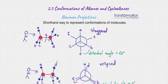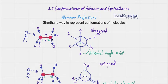We have two carbons — carbon number one and carbon number two. Carbon number one is connected to A on top, B that is coming at us, and C that is going in the back. Carbon number two has D going down, E coming at us, and F going in the back.